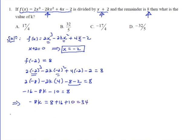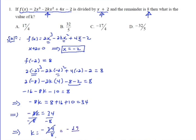So minus 8k is equal to 74, dividing both sides by minus 8. This becomes k equals minus 34 over 8, which simplifies to minus 17 over 4. Therefore this is the value of k, so our answer will be C.